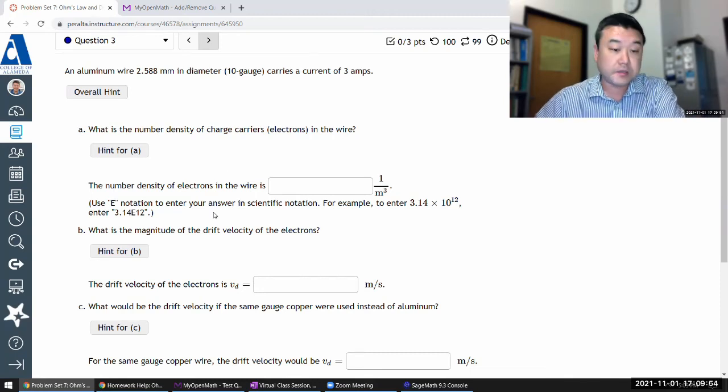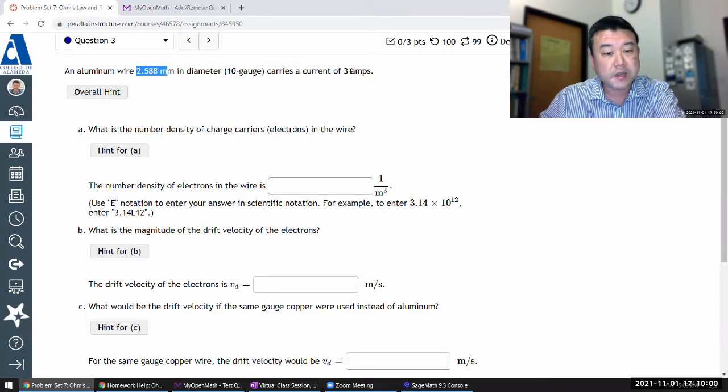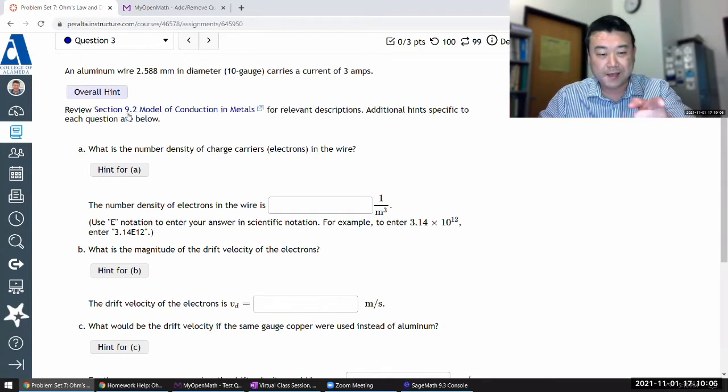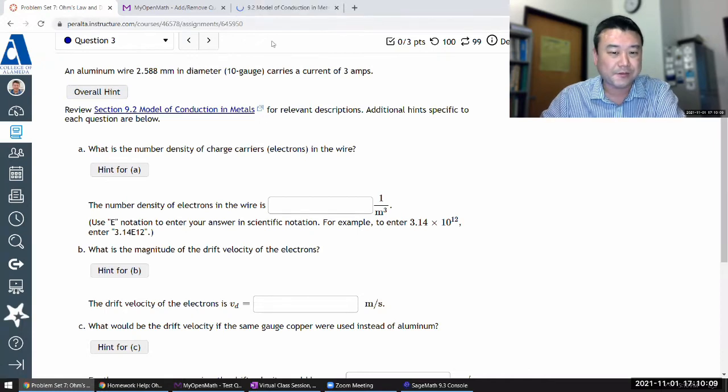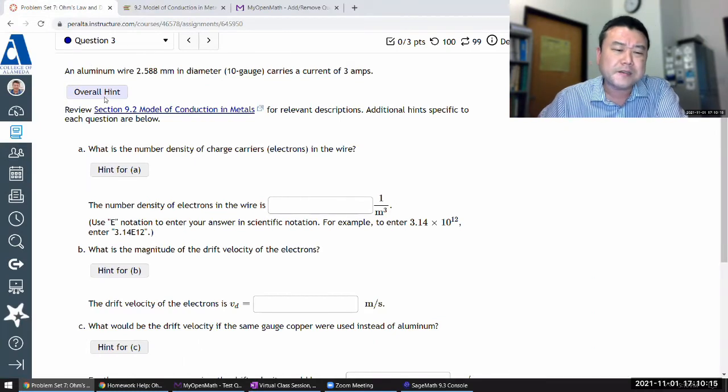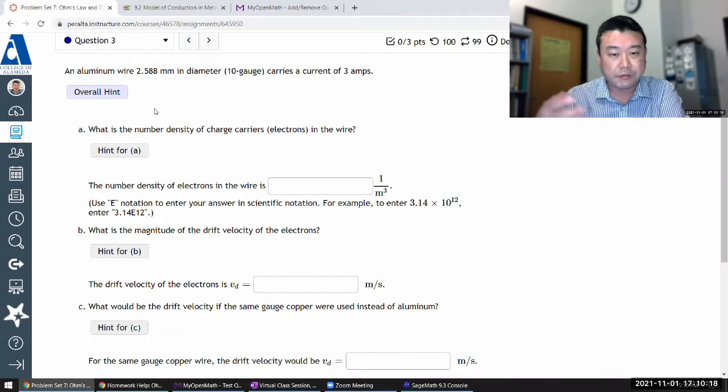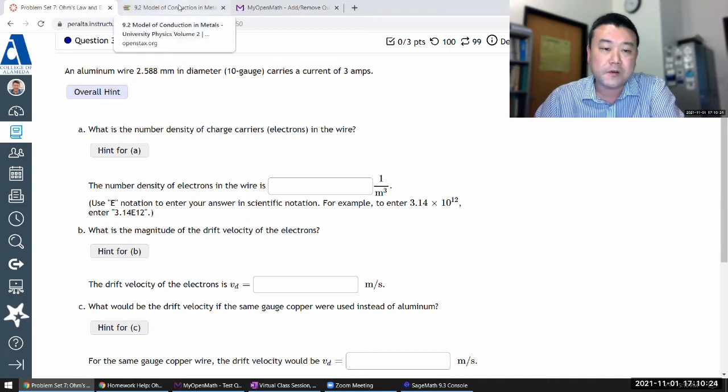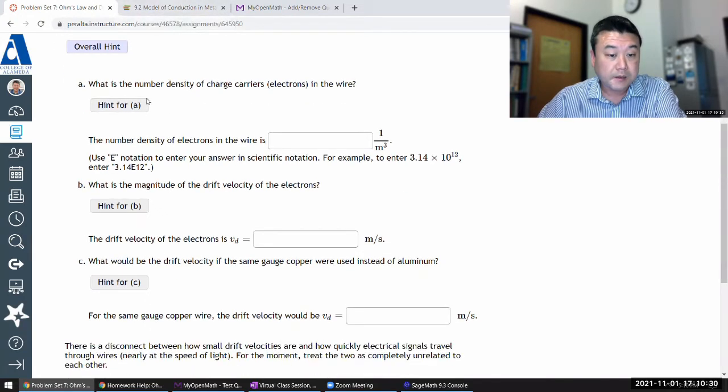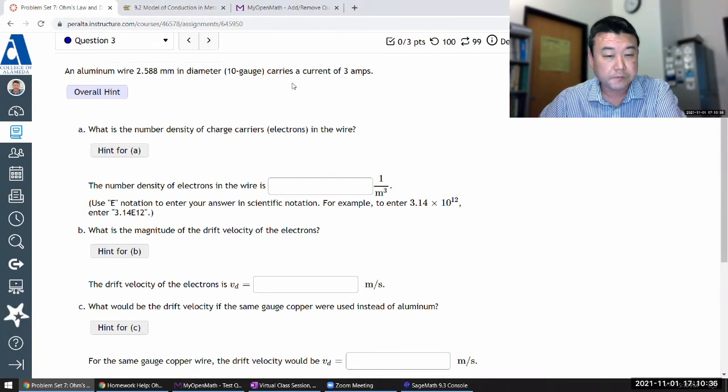So this is the question. It says some wire of some given geometry is carrying some amount of current. And there's an overall hint in the reviewer section. So I'm just going to load that tab in the background so I have that ready to use.